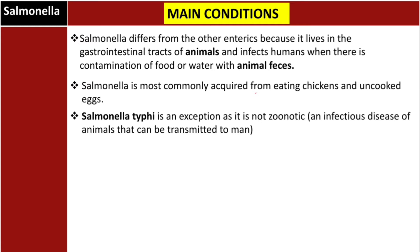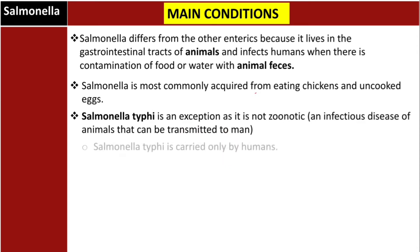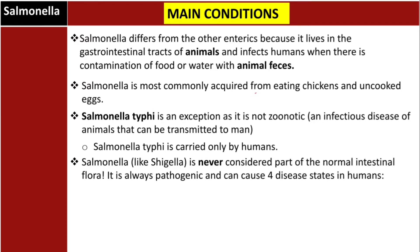Salmonella typhi is an important exception — it is not zoonotic. A zoonotic organism is an infectious disease of animals that can be transmitted to humans. Salmonella typhi is carried only by humans. Like Shigella, Salmonella is never considered part of normal intestinal flora; it is always pathogenic.